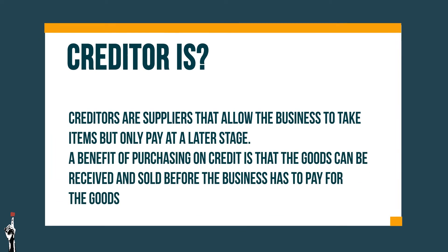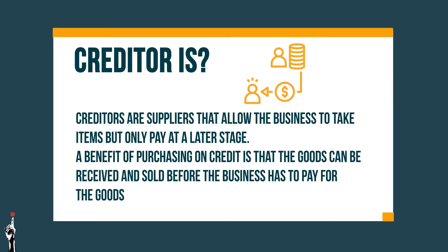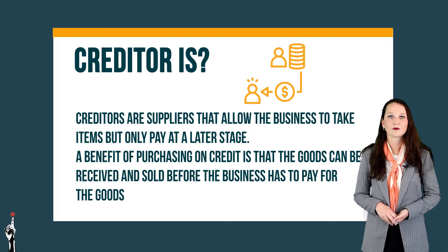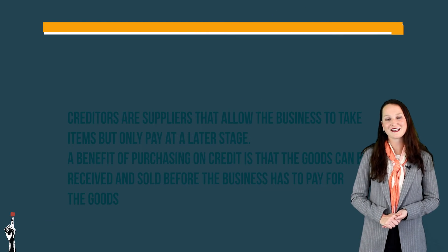So first let's look at what a creditor is. Creditors are suppliers that allow businesses to buy items and only pay for them later. The benefit of purchasing on credit is that goods can be received and sold before the goods have to be paid, and this of course helps with the business's cash flow.